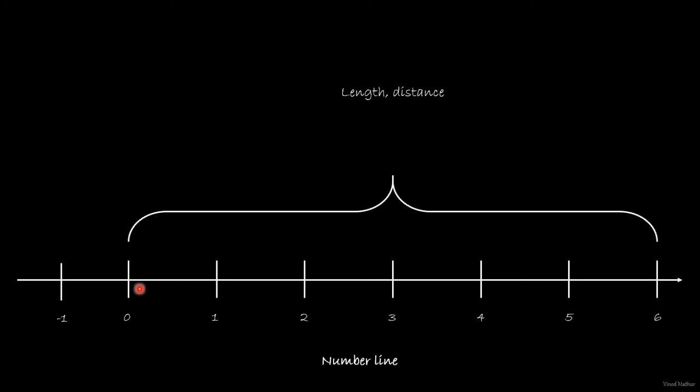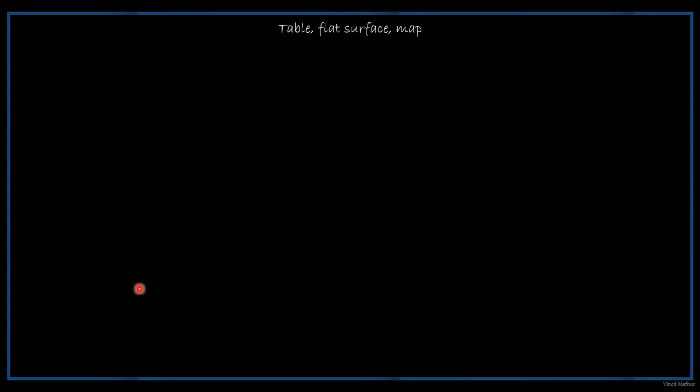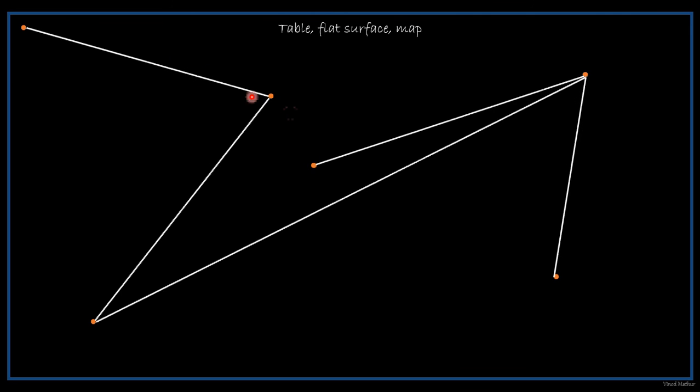Now if I take the same concept out to a two-dimensional plane or a flat surface that has many different points scattered all over, I cannot use the same idea of a number line between two different points or across all these points because I would have to end up drawing too many of those.